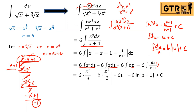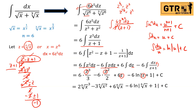Now we substitute back z equals the sixth root of x. Simplifying: six divided by three is two, so the first term is two times (sixth root of x) cubed. Six divided by two is three, so the second term is minus three times (sixth root of x) squared. Then plus six times (sixth root of x), minus six ln|(sixth root of x) plus one|, plus C.